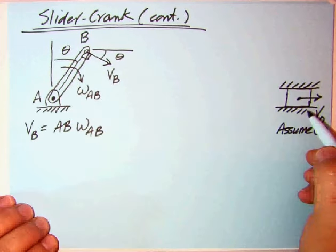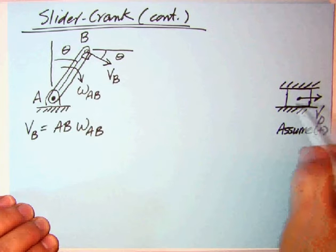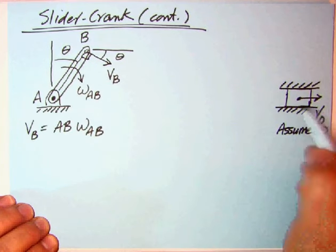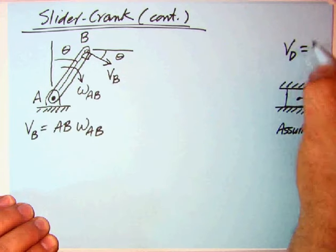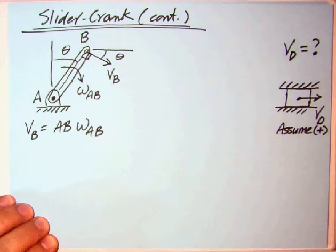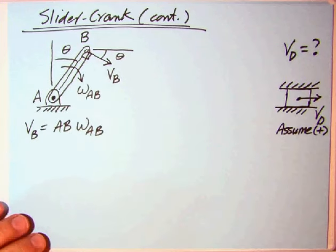Over on the right, the kinematics of the slider is fairly simple. It can only move left and right, so typically that's what we're going to be after. That's one of the unknowns in a typical problem, what is that velocity both magnitude and direction. I've just assumed positive when I don't know something. What's connecting those two is the connecting rod.